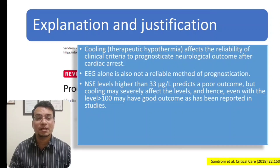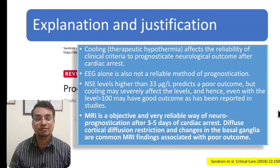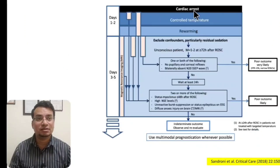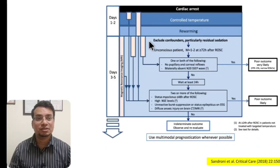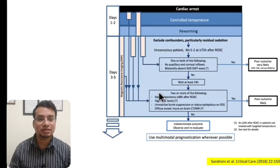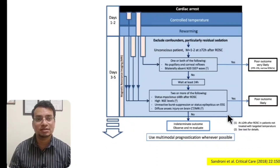Cooling may severely affect NSE levels, and even levels more than 100 may have a good outcome, so you cannot rely on this criterion if cooling is ongoing. The only objective way of determining neuroprognostication after three to five days of cardiac arrest is MRI. After rewarming, from day three to day five, you can administer various prognostic tests. No predictor is 100% specific — multimodal prognostication should always be used. You can do MRI, EEG, SSEP, but always rule out sedative effects and hypothermia.